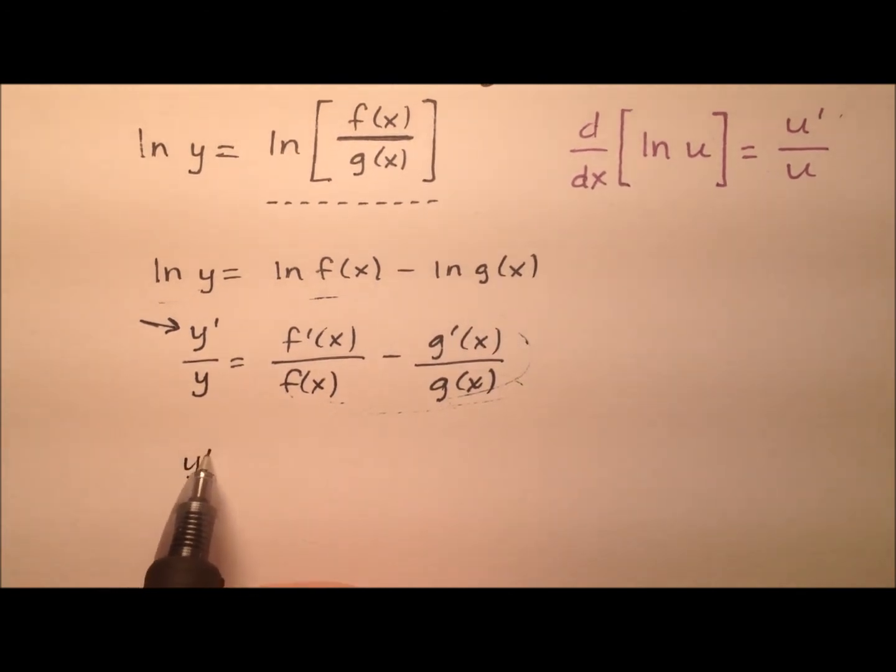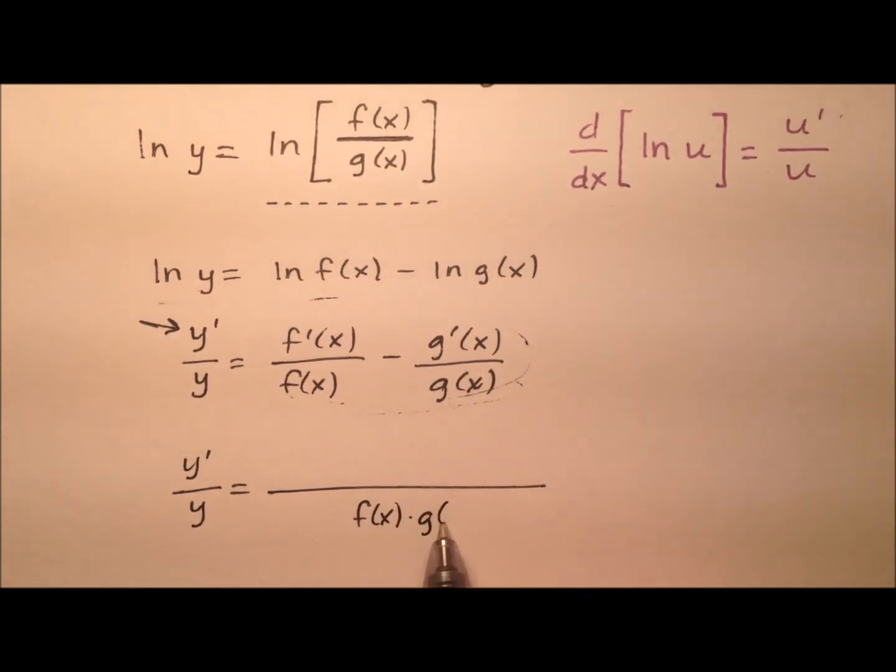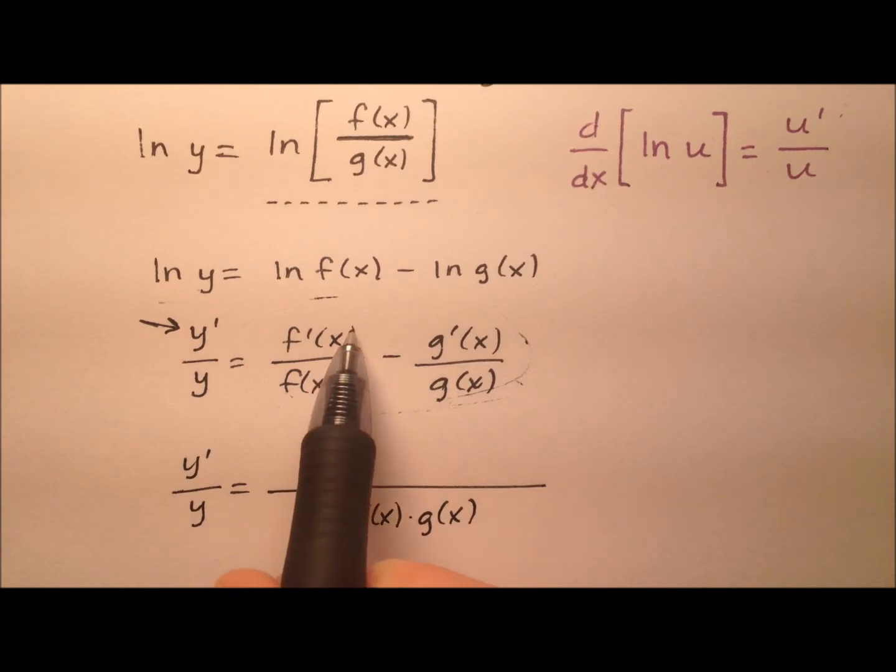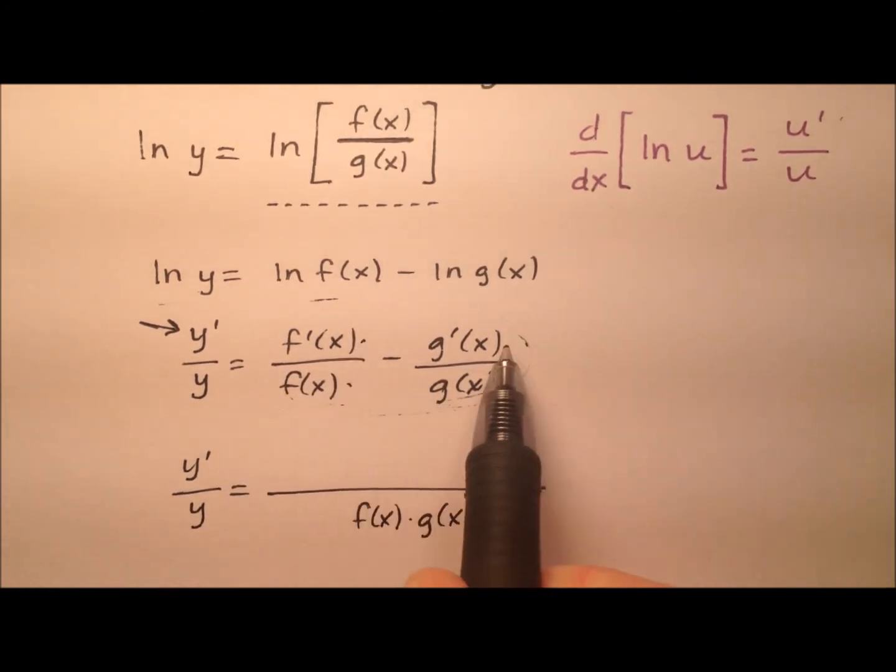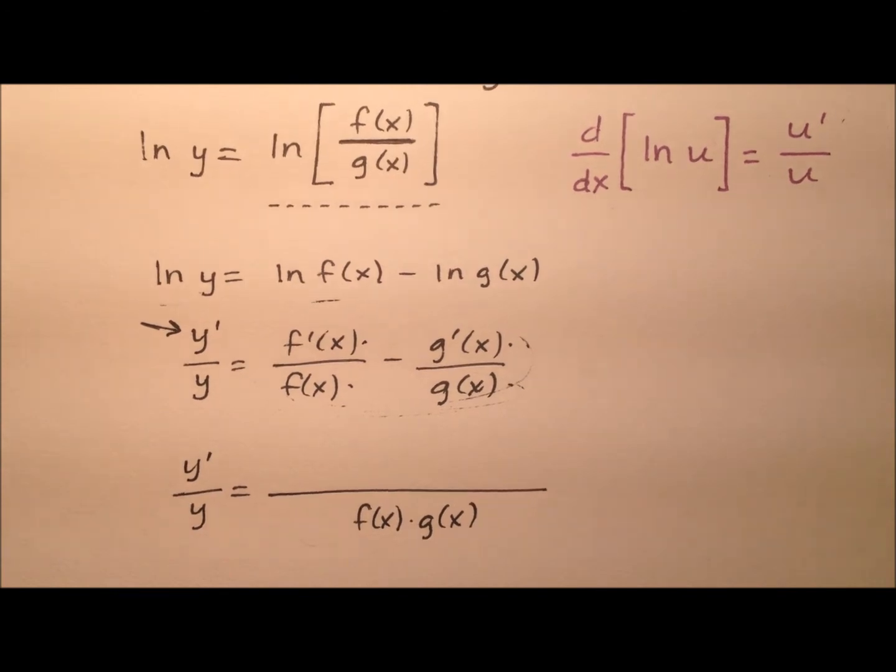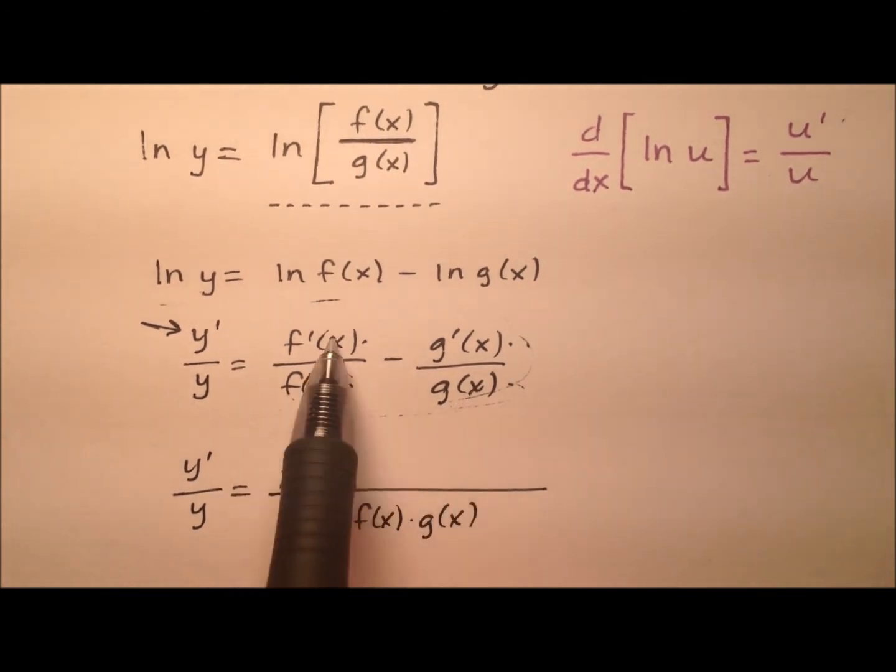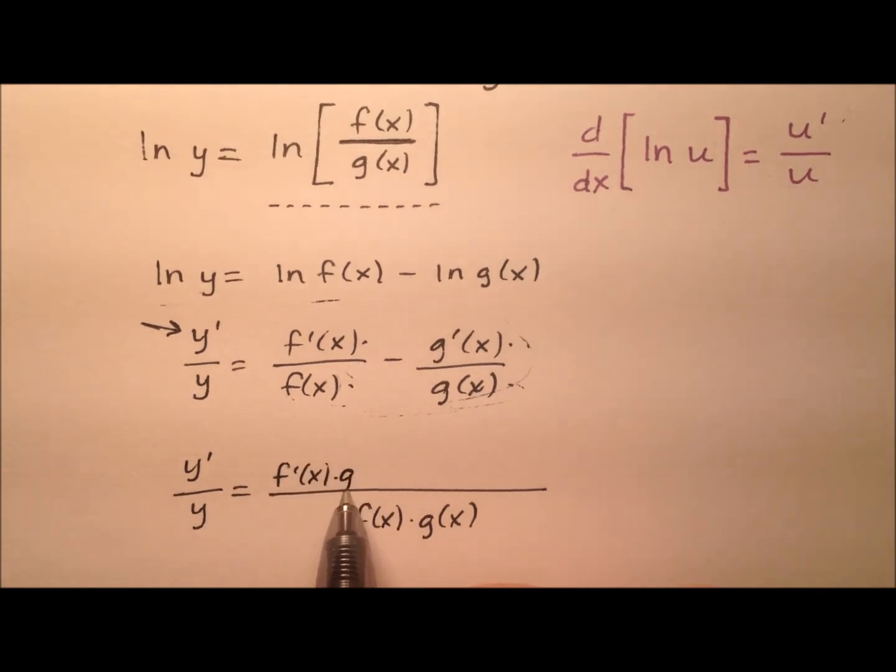And so I'll have my y prime over y equals, and it looks like that common denominator is just going to be those two rascals multiplied together. And so let's go through and fix these numerators, because remember whatever we do to the bottom I need to also do to the top of these fractions. So this one was multiplied by the g of x, so let's go ahead and do it to him as well. So f prime of x times g of x minus,